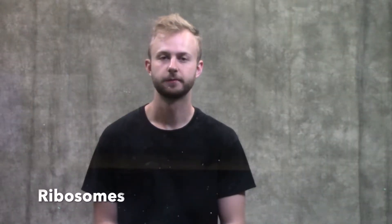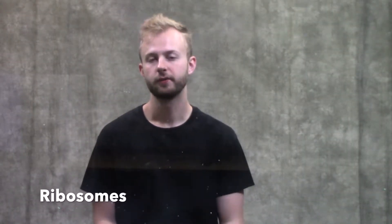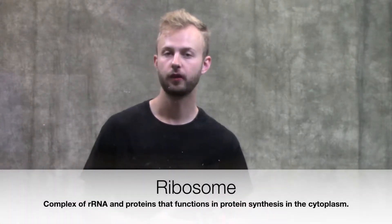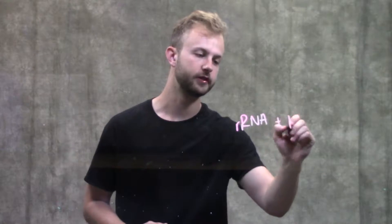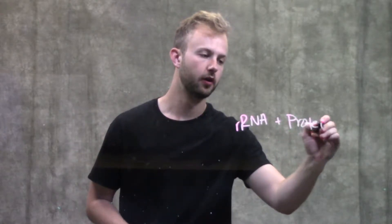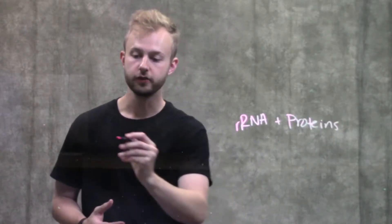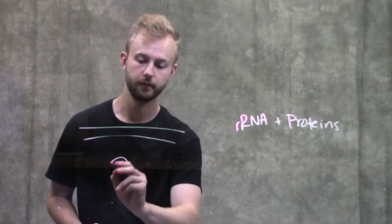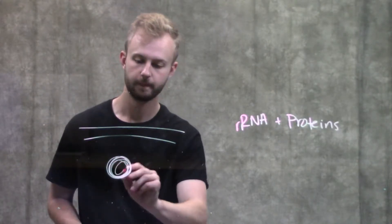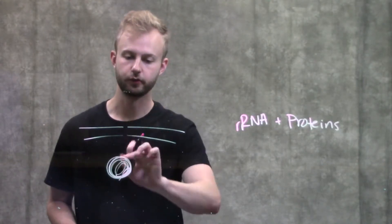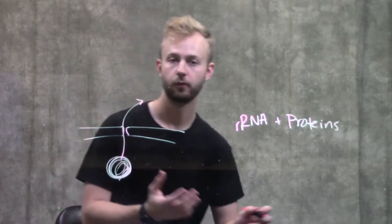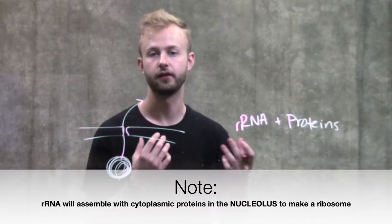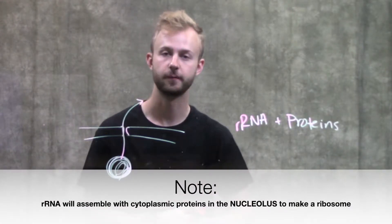This video is going to be about ribosomes. Ribosomes are made up of two main components: ribosomal RNA, or rRNA, and proteins. The rRNA, as we know from the video on the nucleus, is going to come from the nucleolus and exit through a nuclear pore into the cytoplasm, where it will then assemble with the proteins it needs to make a functional ribosome.